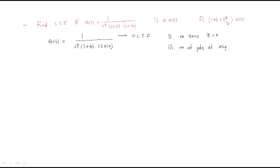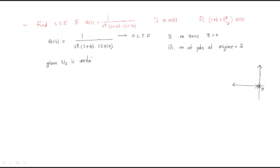...number of poles at origin equals 2, that means at s=0 it has two poles. The origin is at zero. If we have two poles here at the origin, then the system is an unstable system.